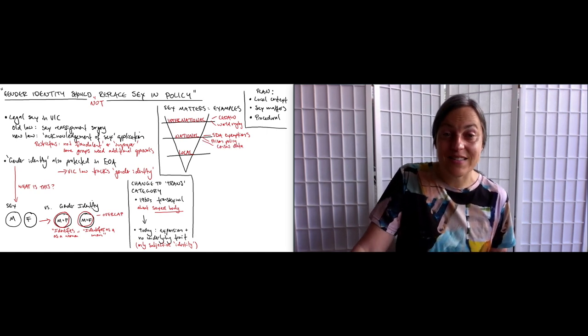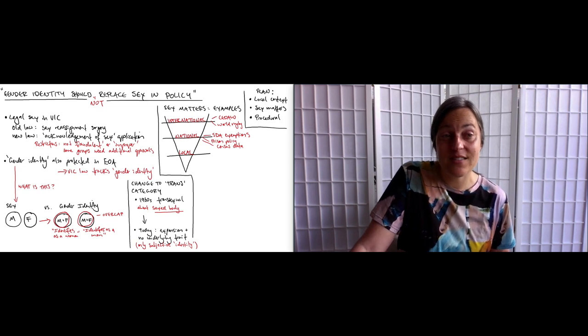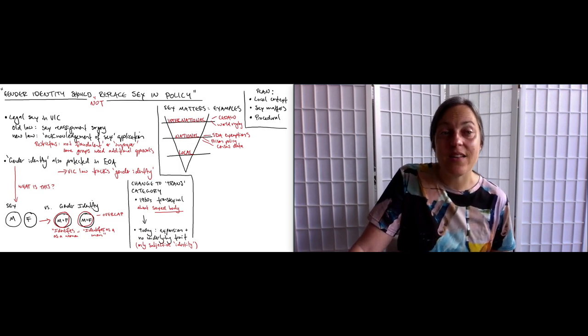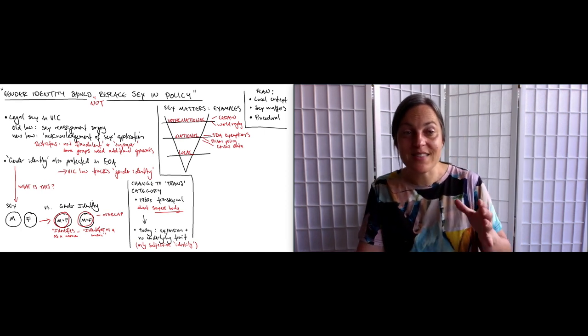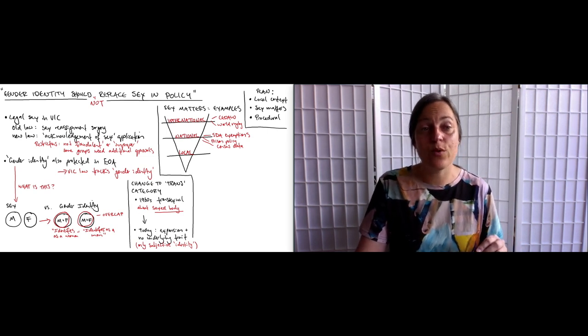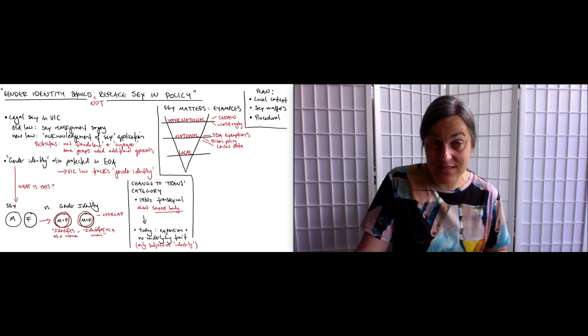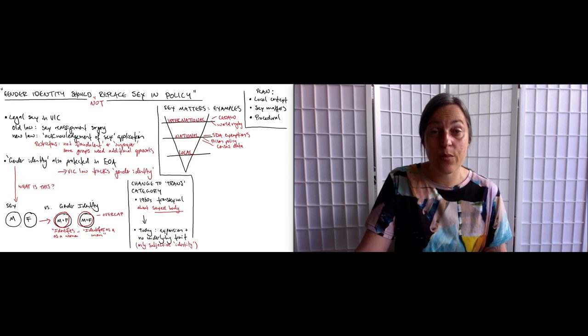In Scotland, there is currently a discussion happening about the census, because there has traditionally been a question about sex, but there has been an attempt by activists to have the sex question replaced by a question about gender identity. Researchers have pointed out that sex is one of the most important variables in sociological research, and that there are very often sex differences in the outcomes we're interested to measure. If we replace sex with gender identity in the census, or in any other data gathering, then we lose information that is important, and we become unable to track sex-related outcomes. Given that we know there are sex-based differences in outcomes, for example, that there are less women in full-time work, losing this data would compromise our ability to track the progress we were making toward improving outcomes for women.